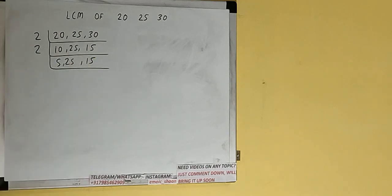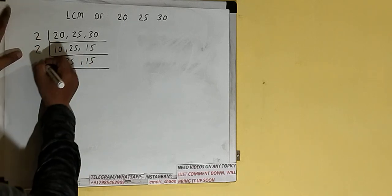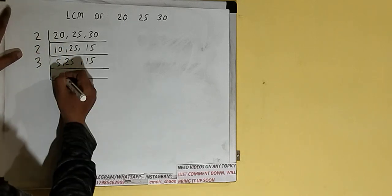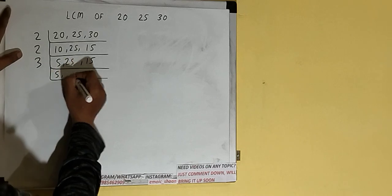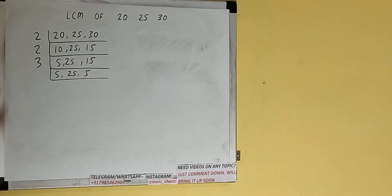Now we check — none of the numbers are divisible by 2, so we move to the next lowest prime number, which is 3. The last number is divisible by 3, so we divide it by 3. The first and second numbers remain the same, and the last number becomes 5.